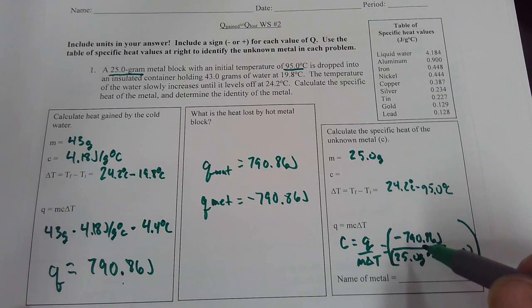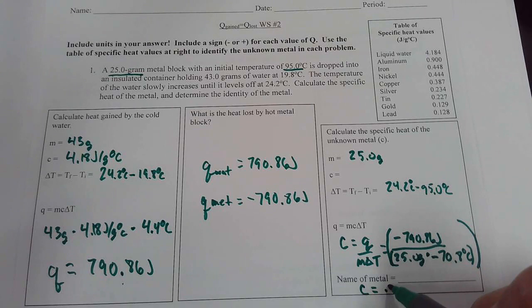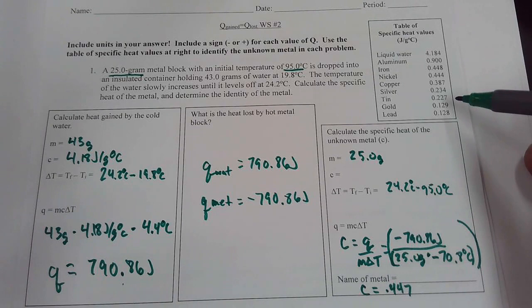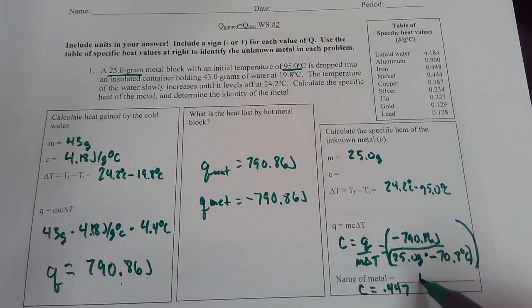So we're going to look up here. Which one would be closest to 0.447? And this one would be iron.